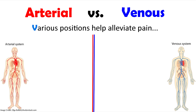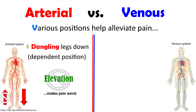V is for various positions that alleviate the pain. You want to ask the patient what type of position helps them alleviate the pain, because this is really going to help you differentiate between arterial and venous. With arterial, the patient is going to prefer dangling their legs down in the dependent position, because with arterial you're having issues with blood actually going to the extremity, causing ischemia. When they dangle their legs, that helps blood flow get there. However, when they elevate the legs, that makes the pain a lot worse because that is impeding the blood flow.